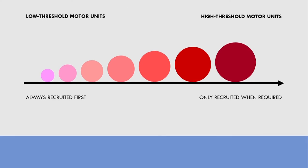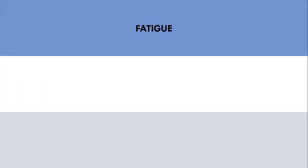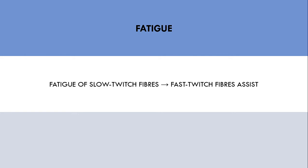Next, let's discuss fatigue and how this may influence motor unit recruitment. As we mentioned, if a task has low force demands then only the slow twitch fibers will be recruited. However, if we continue to perform the same low force task for an extended period of time, then eventually these fibers start to fatigue and can no longer perform the task alone. At this point, higher threshold motor units kick in to assist with the exercise.